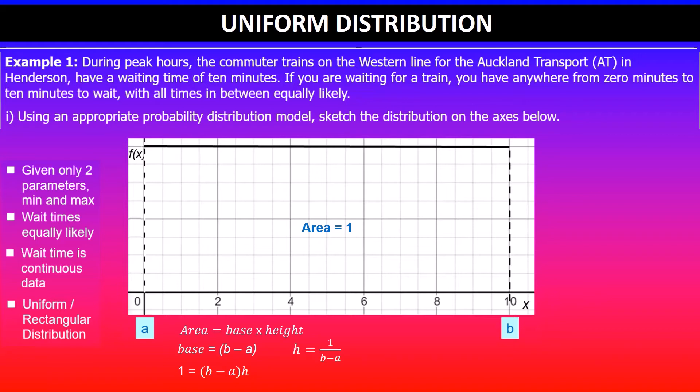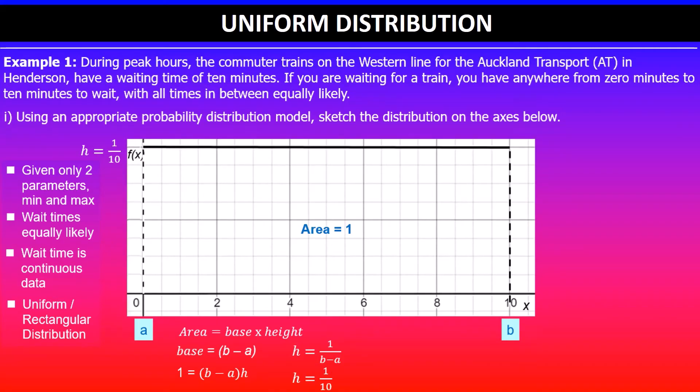Rearranging to make h the subject, it's one over b minus a. In this case b is 10, a is 0, so 10 minus 0 is 10. We end up with a height of one-tenth. So there we have it, this is the graph that will model this scenario with a height of 0.1 and the maximum wait time of 10 minutes.